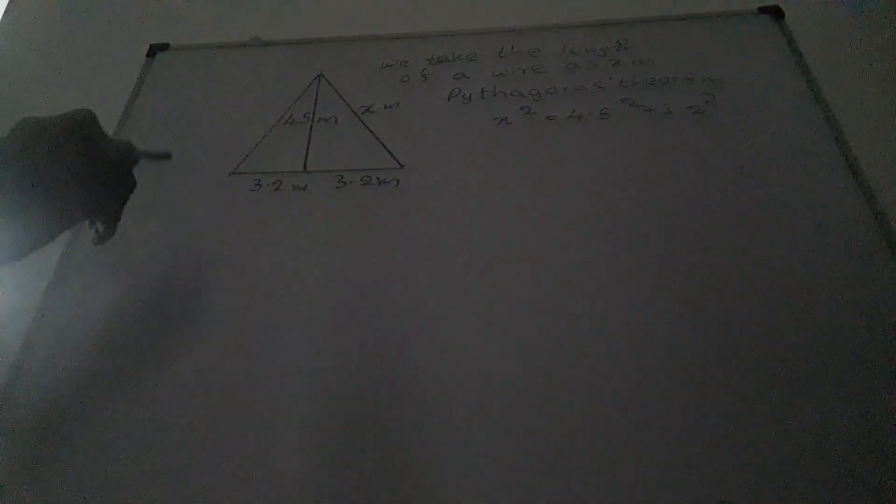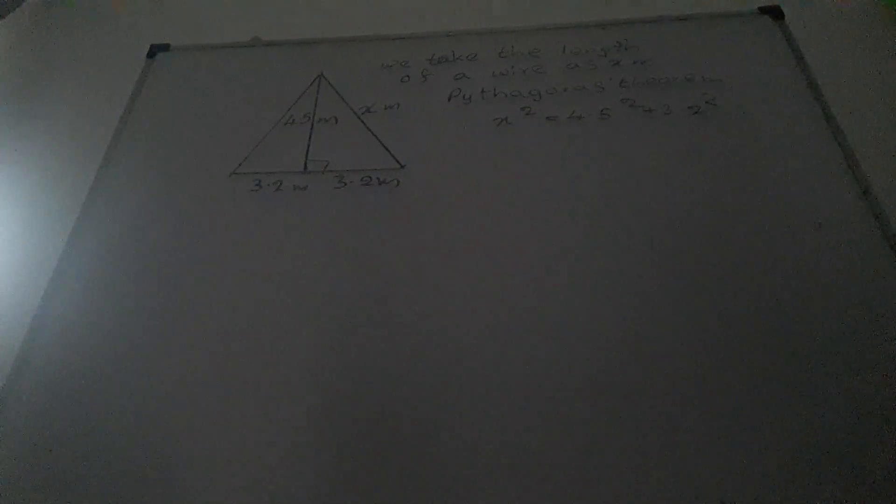X square is equal 4.5 square plus 3.2 square. What is 3.2 square equal? That is 10.24. Yes, it is 10.24.